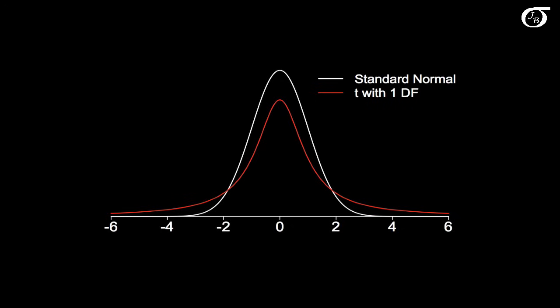Here's a plot of the standard normal distribution in white, and a t-distribution with 1 degree of freedom in red. We can see that both distributions are symmetric about 0 and bell-shaped, but the t-distribution has heavier tails and a lower peak.